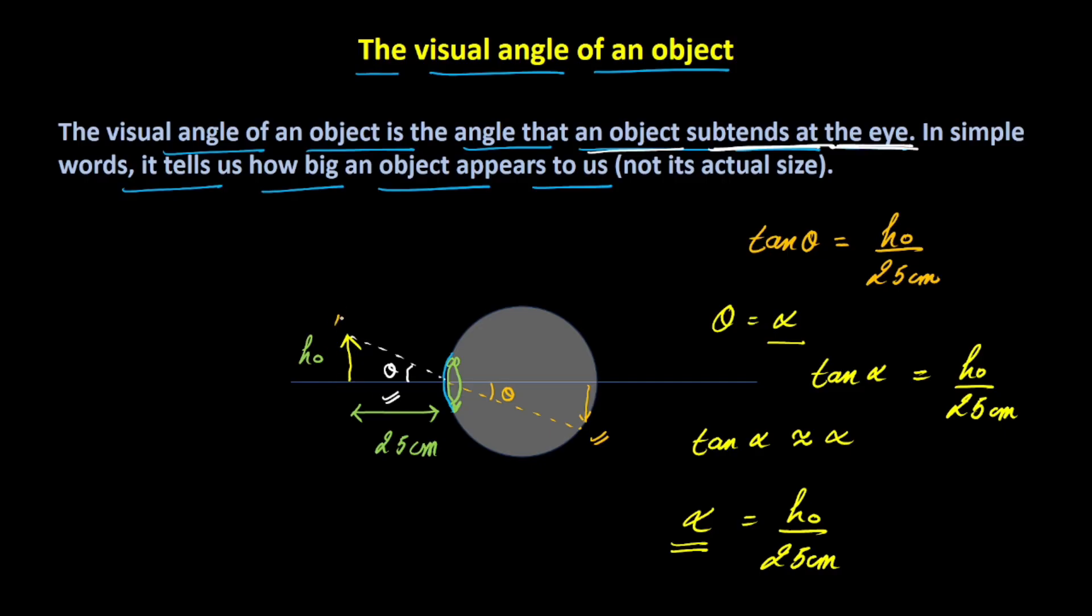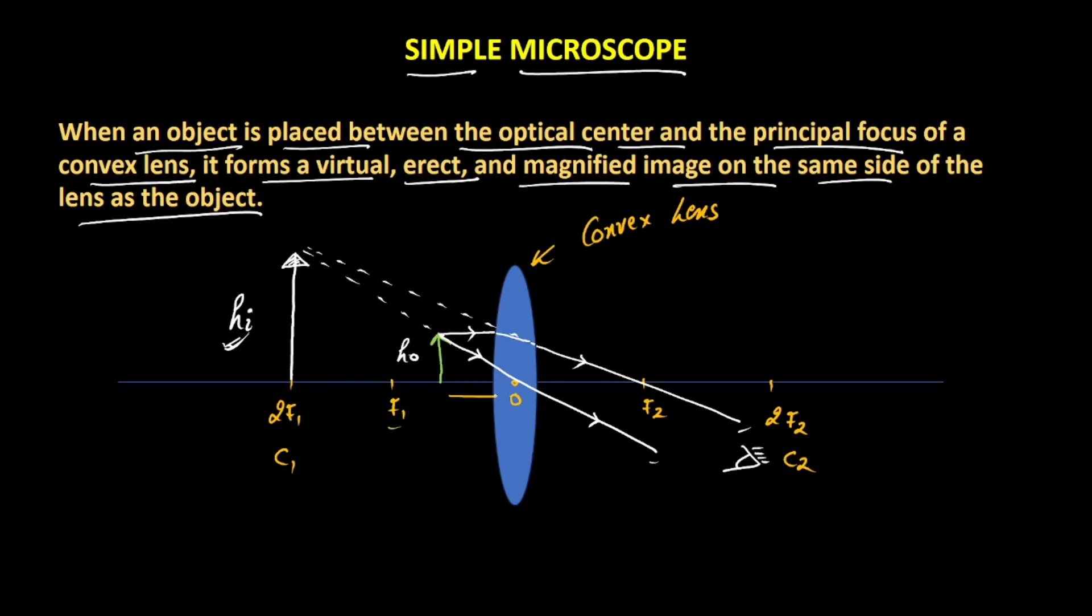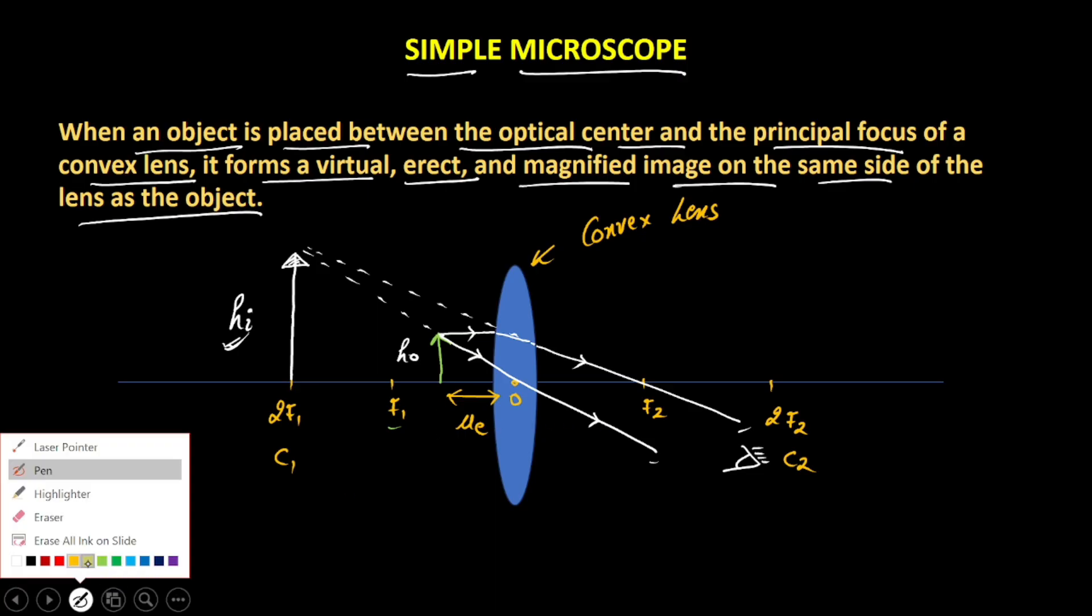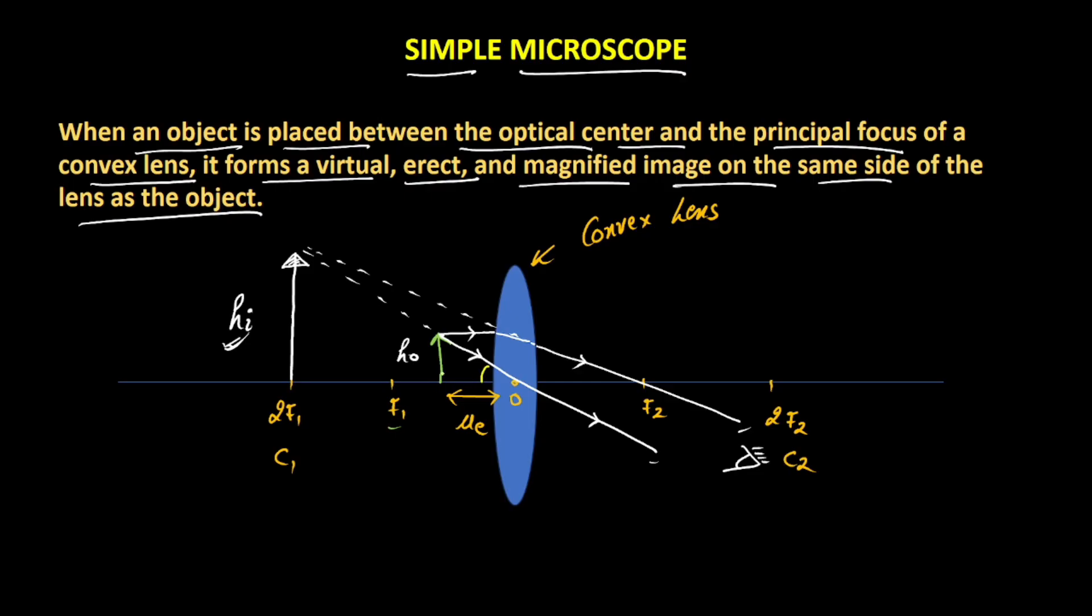Let's say this object AB we have kept at a distance less than 25 cm. So let's say this is the distance of the object from the lens. We can call it as UE. And this UE is less than 25 cm. And let's say this angle, the visual angle in this case is beta. Now, if UE is less than 25 cm, we can very well see that this beta has to be greater than alpha.